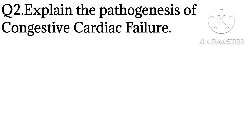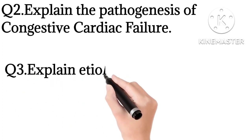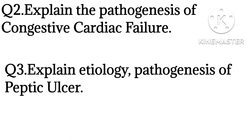The next question is: explain the pathogenesis of congestive cardiac failure. For congestive cardiac failure, the same approach applies — write what congestive cardiac failure is, then causes and symptoms. Then move on to the third question: explain the etiology and pathogenesis of peptic ulcer. Here also, first write what peptic ulcer is, then etiology (meaning causes).